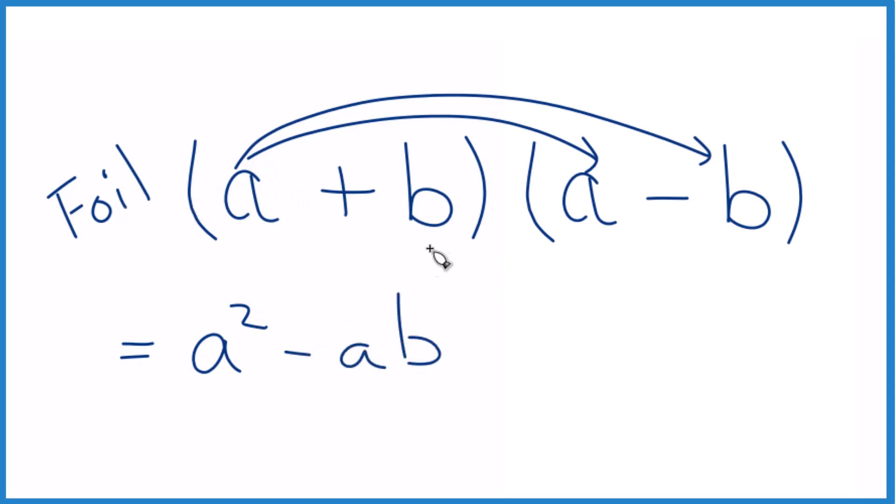The inside, b times a, which is really just ab. And then the last term, b times negative b. That gives us negative b squared.